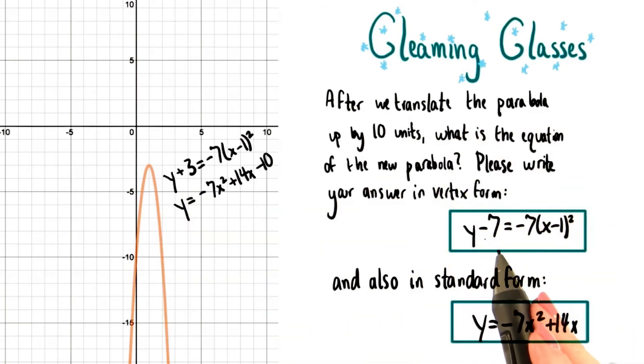And this gives us an equation of y minus 7 equals negative 7 times x minus 1 squared.